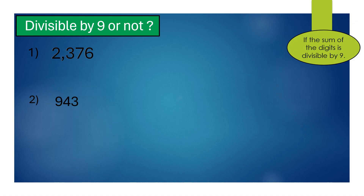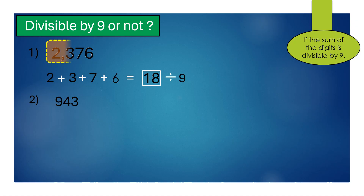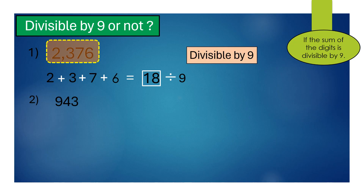For 2,376, to check whether it is divisible by 9, we will add the digits: 2 + 3 + 7 + 6 = 18. Its sum is 18, which is divisible by 9. Therefore, the given number 2,376 is also divisible by 9.